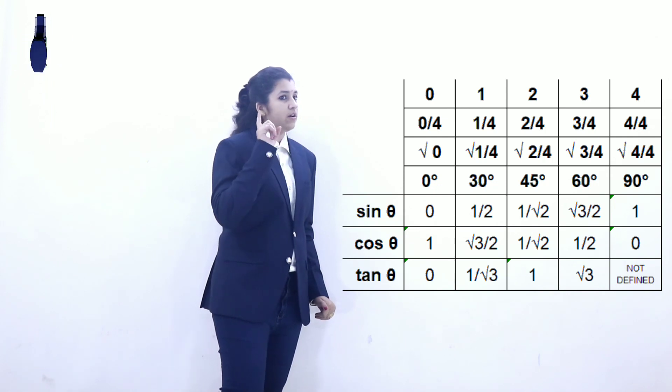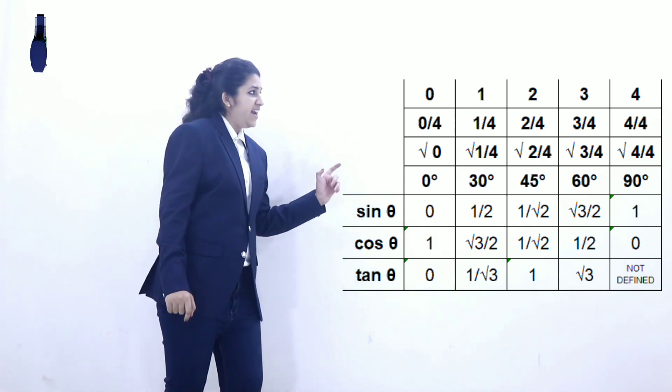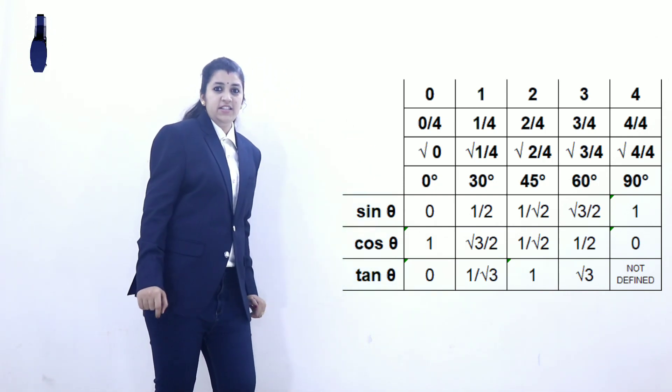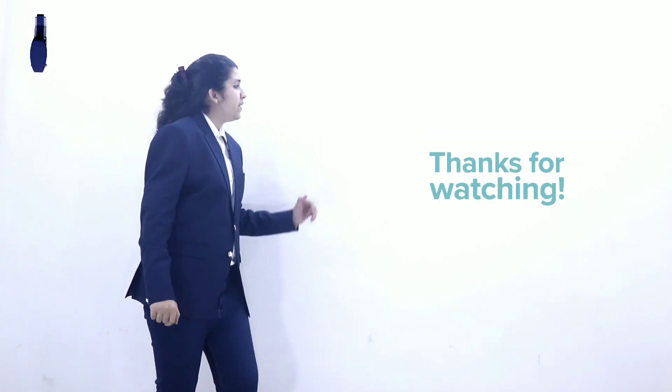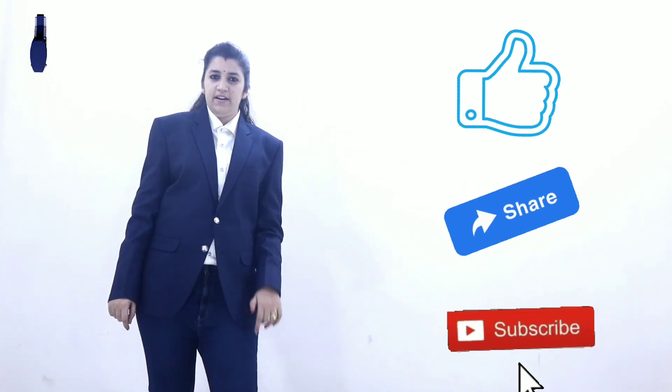You can verify in your books that tan 90° is not defined. That's all for today's lecture — I have discussed 3 ratios; the other 3 I will discuss in the next lecture. If you like the video, please like, share, and subscribe, and don't forget to press the bell icon. Thank you so much.